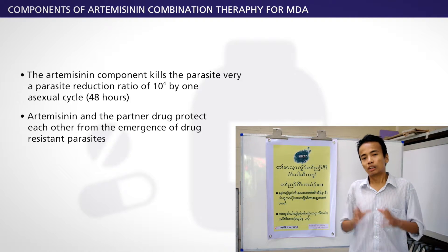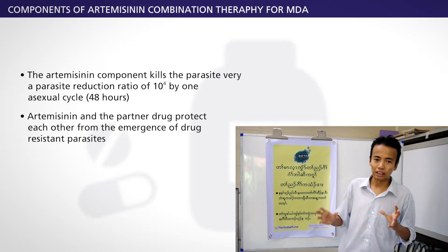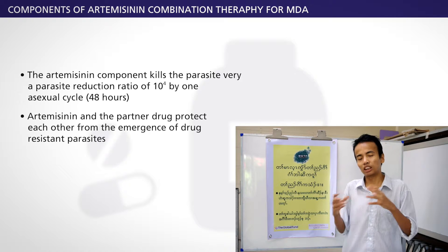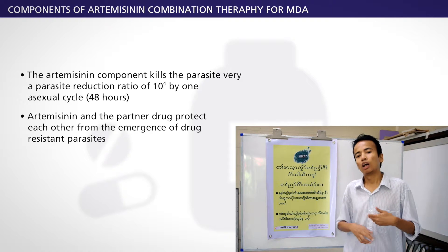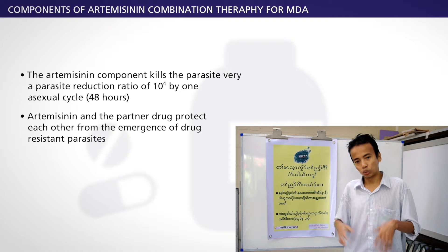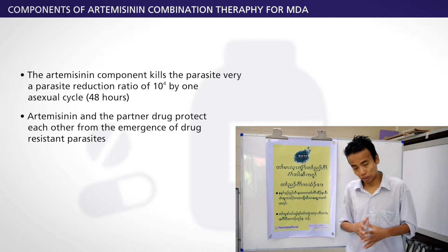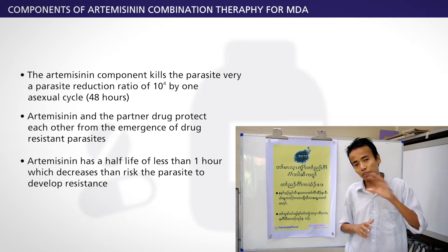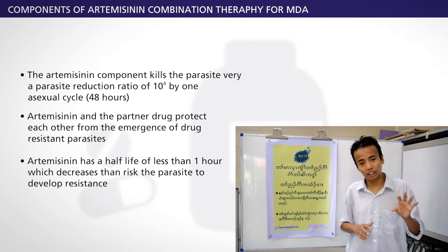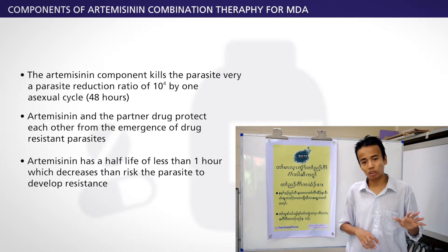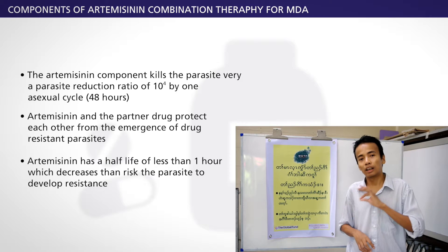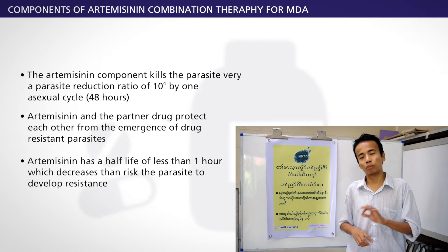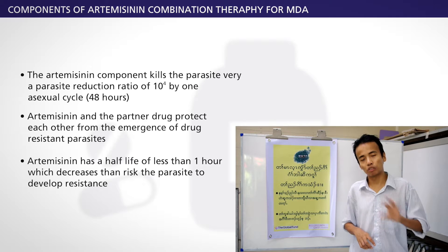These two drugs — artemisinin and the partner drug — protect each other from drug-resistant parasites emerging. The artemisinin drug lives in the blood for a very short time; the half-life is just less than one hour, giving less chance for the parasite to develop resistance.